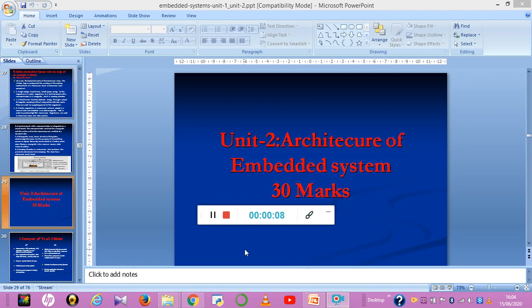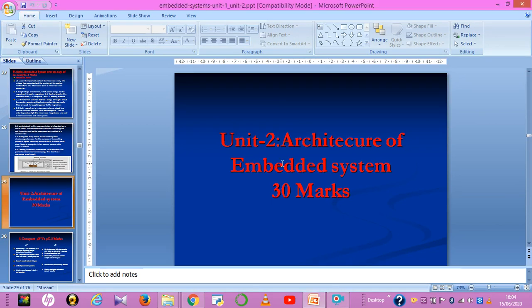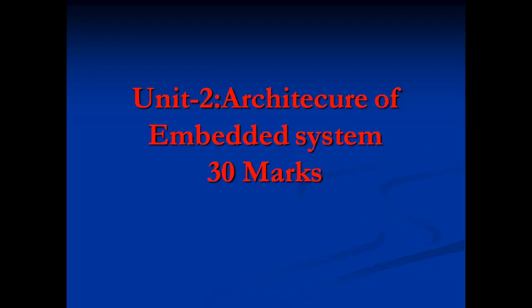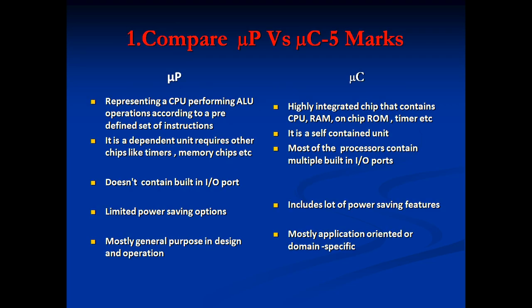Hi everyone. Now we will discuss the questions from the second unit — those asked in the question bank of embedded systems. Unit number two, Architecture of Embedded Systems, is asked for 30 marks in the actual exam. We will go with the first question: compare microprocessor versus microcontroller, 5 marks.